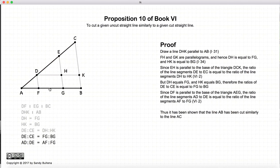Again, Proposition 2 of this book. So finally, we have shown these ratios hold: AD to DE equals AF to FG, DE to EC is equal to FG to GB. And thus, we've shown that the line AB has been cut similarly to the line AC.